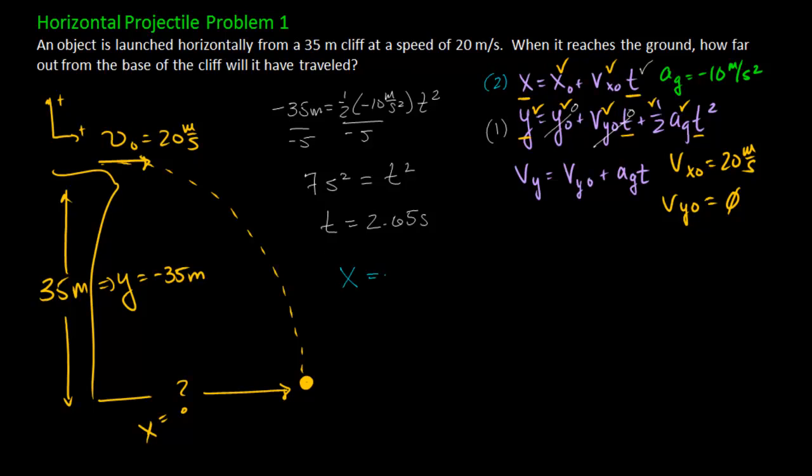Plug in where I know I'm looking for x. Initial x position is zero, so this term goes away. Initial x velocity was 20 meters per second. And my object's been traveling for 2.65 seconds. If I do a little math, I get that this object has traveled along the ground only in the x direction about 53 meters.